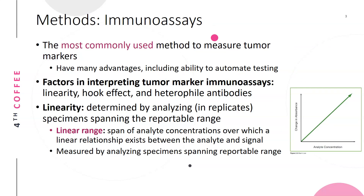Immunoassay is the most commonly used method to measure tumor markers. It has many advantages, including the ability to be easily automated. There are some important factors in interpreting tumor marker immunoassays: linearity, the hook effect, and heterophile antibodies — all of these need to be considered.